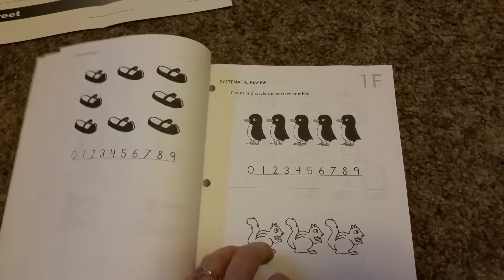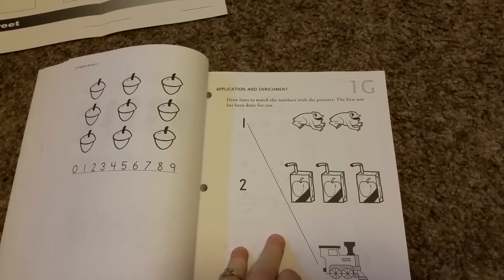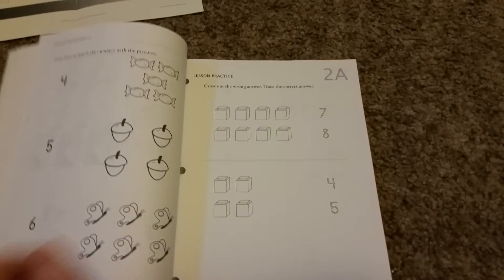And then D, E and F are review. And then in the younger kid books here, they have a G. And it's just a fun one, an application. And that's what you do.